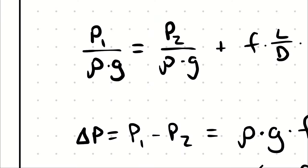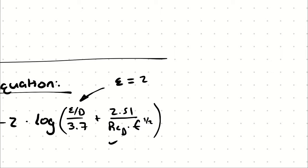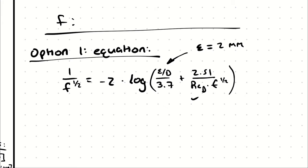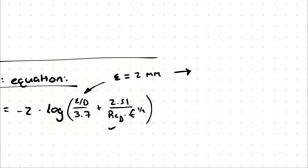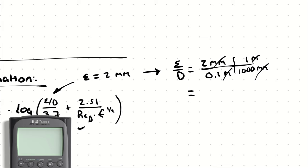Two millimeters and a diameter of 0.1 meters. Alternatively, I could write epsilon over diameter as two millimeters divided by 0.1 meters, and there are 1,000 millimeters in a meter. So my relative roughness is two divided by 100, which is two hundredths, or 0.02.